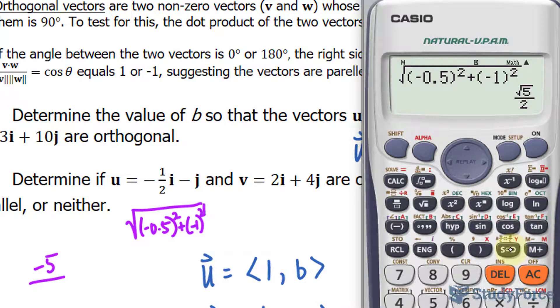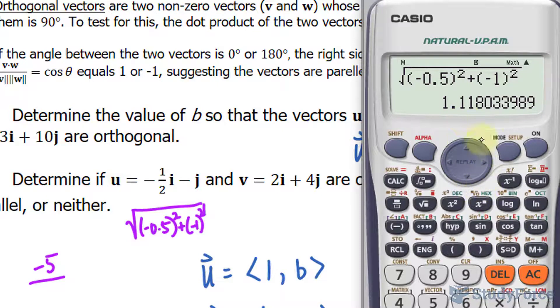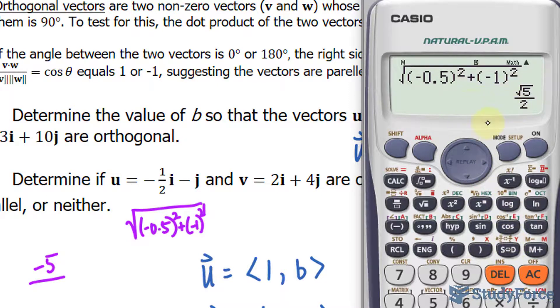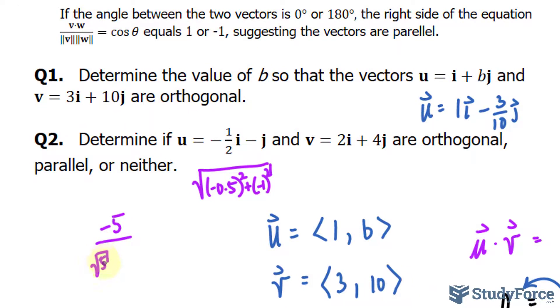That is equal to approximately 1.118, where the exact value is the square root of 5 over 2.